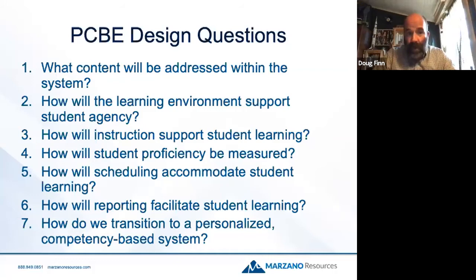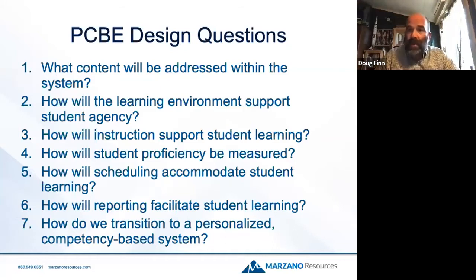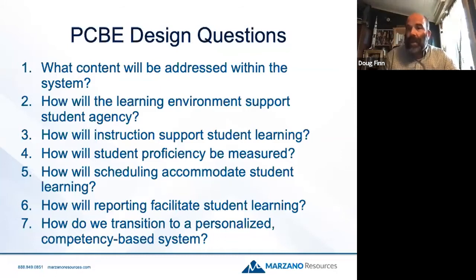Those first four are foundationally important components. Then you get into the fifth one: how will scheduling accommodate this? Scheduling is a crucial component. Then there's reporting — notice it's the sixth one. Most people want to jump to making a standards-based report card, but that's just a piece of paper you mail home to parents. Working through the first six design questions gets you thinking about the structure of competency-based education. The seventh is transition — how do you go into this? That transition can shift anywhere from three to five years, depending on culture and resources in your school district.